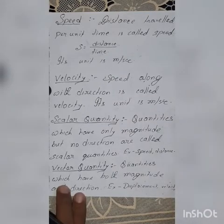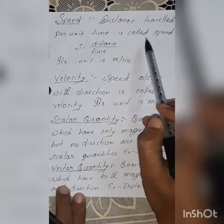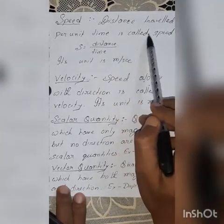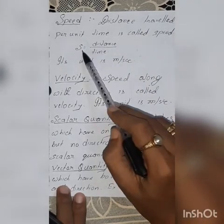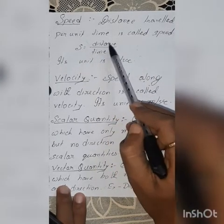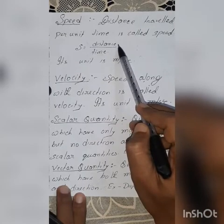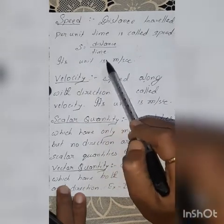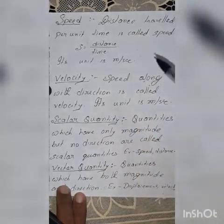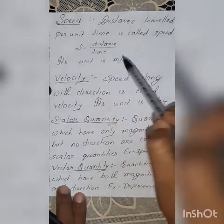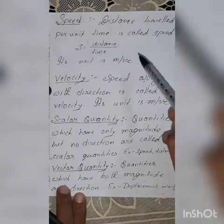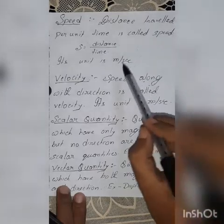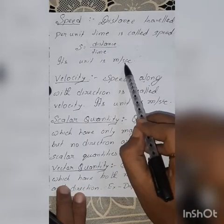Today, we all are going to learn about speed. Distance traveled per unit time is called speed. Speed is denoted by S and it can be derived by the formula distance by time. Its unit is meter per second. In case of non-uniform motion, speed can be derived by total distance divided by total time.